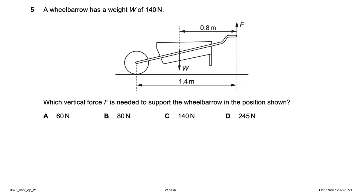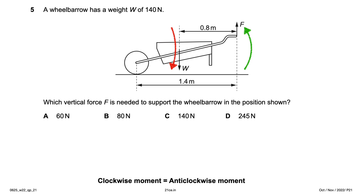A wheelbarrow has a weight W of 140 newtons. Which vertical force F is needed to support the wheelbarrow in the position shown? This is a moments question: clockwise moment equals anti-clockwise moment. The weight W acts at the center, creating a clockwise moment at a distance of 0.6 meters (since the total distance is 1.4 meters).